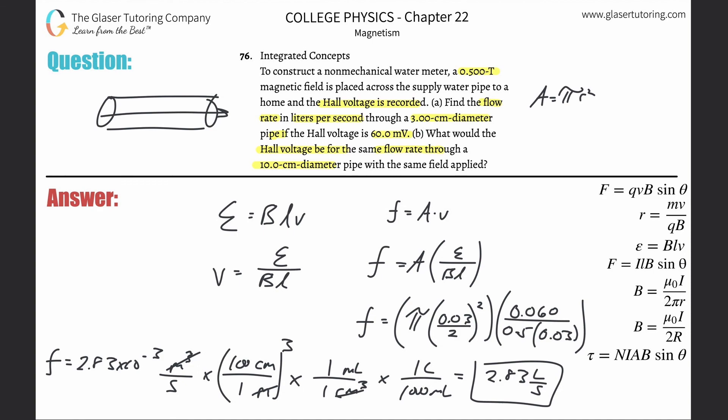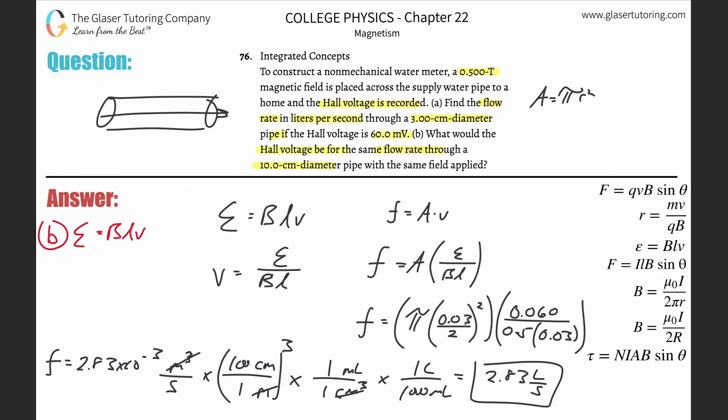All right, so now basically what we have to do is we have to calculate the Hall voltage this time. So E, and yeah, basically all we got to do for letter B is use this formula. Hall voltage is equal to B times L multiplied by the velocity. So in order to calculate the Hall voltage here, we need to know the magnetic field, which we do, which was 0.5, and the diameter basically of the tube, right, so that's going to be 10 centimeters, but we need that in meters, so that's 0.1, then multiplied by the fluid velocity. Now they said that the flow rate is the same, so this is the flow rate, right? But how is flow rate related to velocity? Via this formula. In other words, the velocity of flow is equal to the flow rate divided by the cross-sectional area.